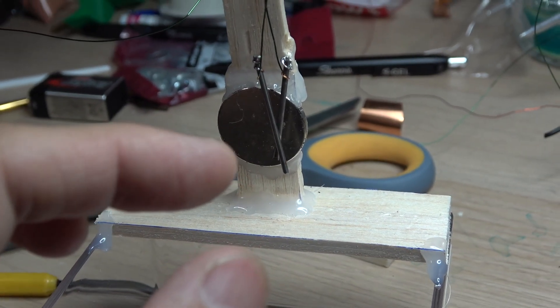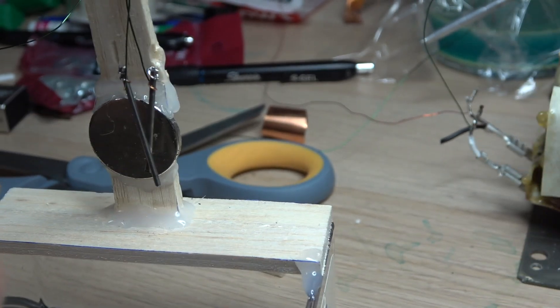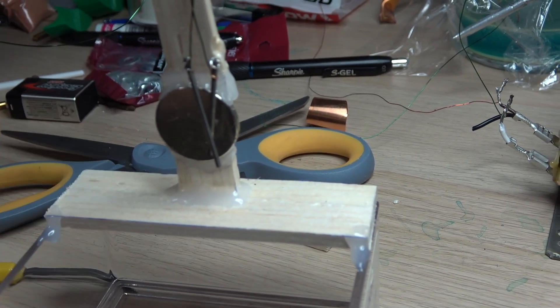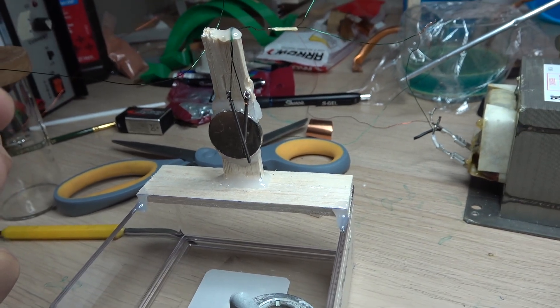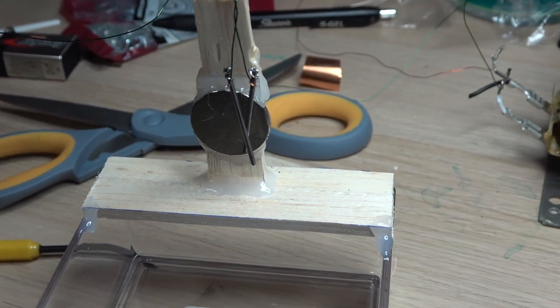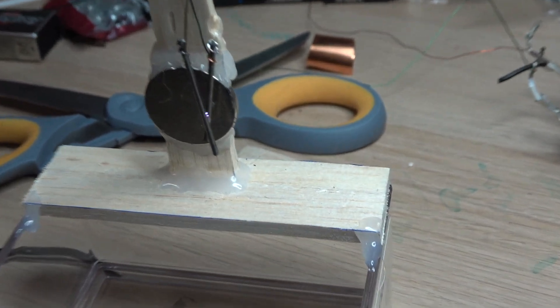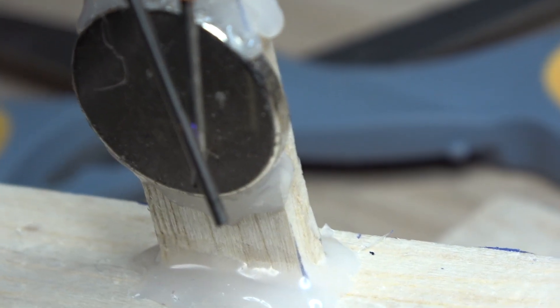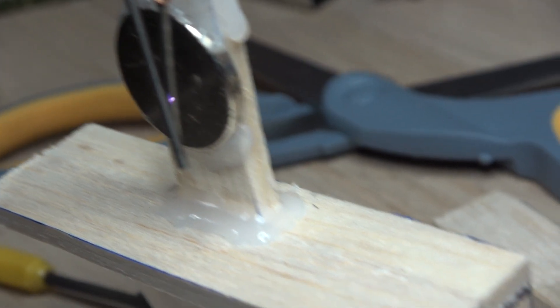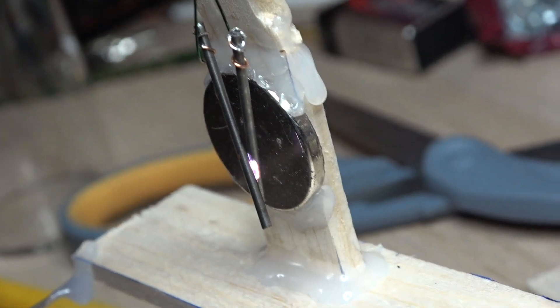Normally with a spark gap you have high voltage, but this is like a low voltage DC spark gap. But it works, so I'm quite pleased with it. Let me turn it on again. See, just like a Tesla Jacob's ladder.